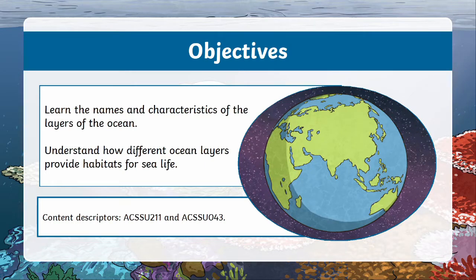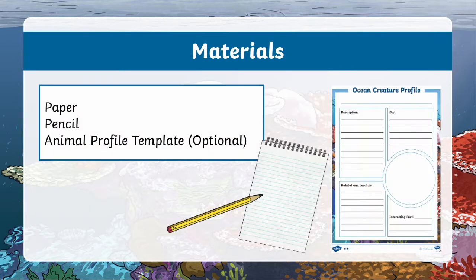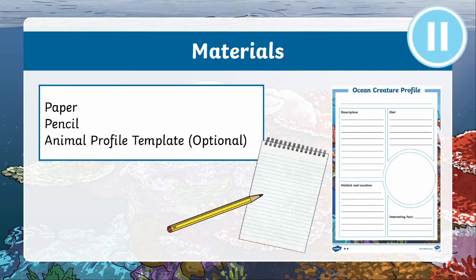We'll also be talking about how these different layers provide habitats for different kinds of animals. For this video lesson you won't need much, just a piece of paper and a pen or pencil. If you like, you can download and use the animal profile template from the Twinkl website, although it is optional. I'll leave a link to it in the description below. Hit the pause button now if you'd like some time to get your materials together.